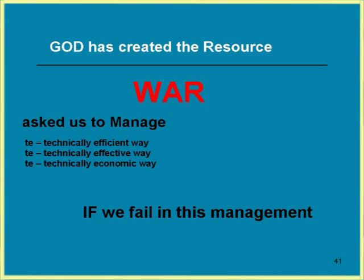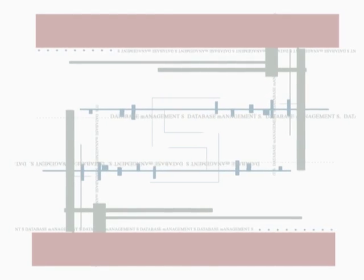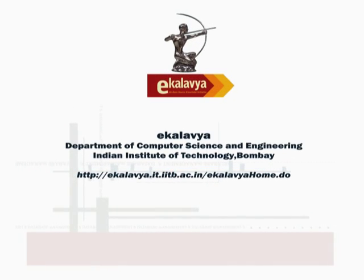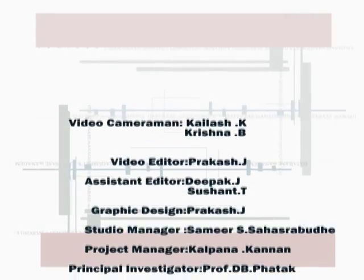God has created resources, and after creating man he stopped because it is evolutionary. He created water and asked us to manage it in a technically efficient, effective, and economic way. If we fail in this management, technology will go and we will end up with war — and the better creature created by God will vanish from the world. So let's learn about this.